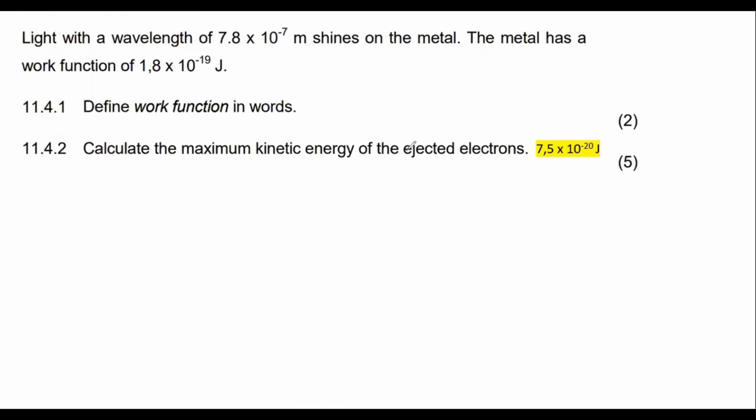So I've got the definition here for you guys. The work function is the minimum energy needed to eject, or sometimes they use the word release, to eject an electron from the surface of a metal. I'll just leave that up there for a little bit while you guys check it out.